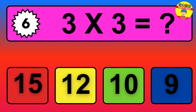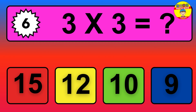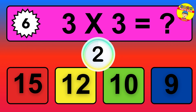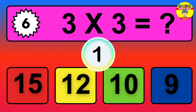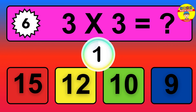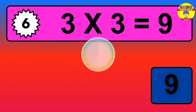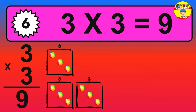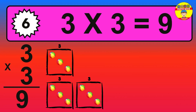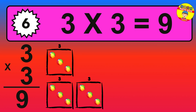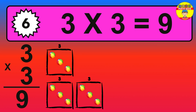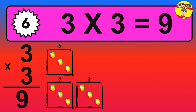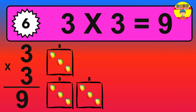Question six: three times three equals what? The answer is three times three is nine. To calculate, we have three groups with three balls each one. So how many balls do we have? Nine balls.